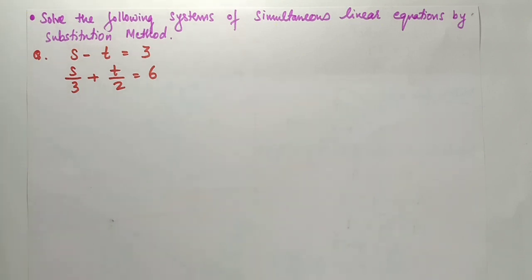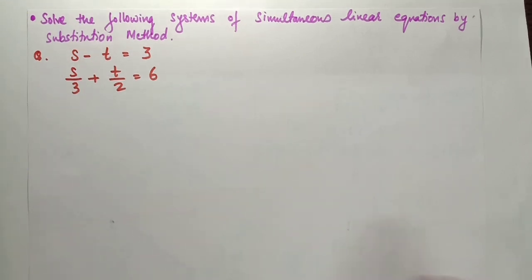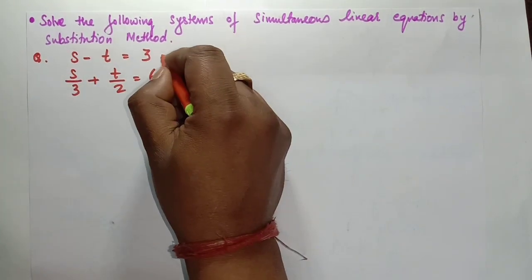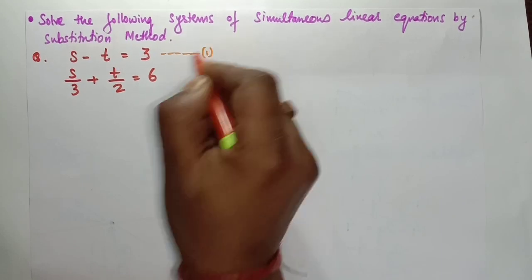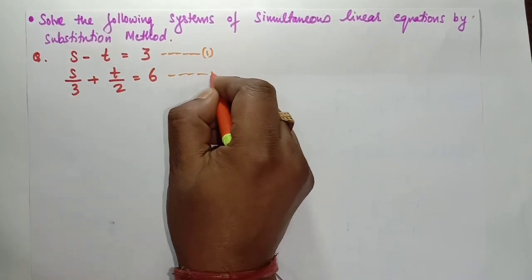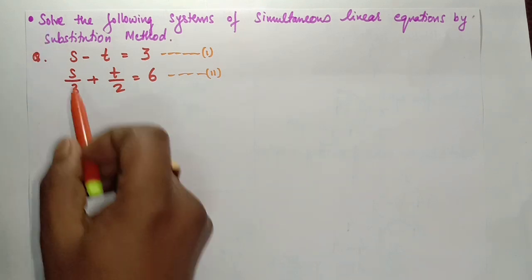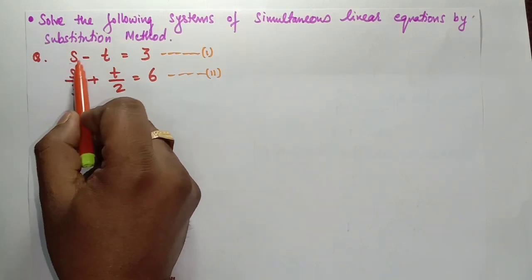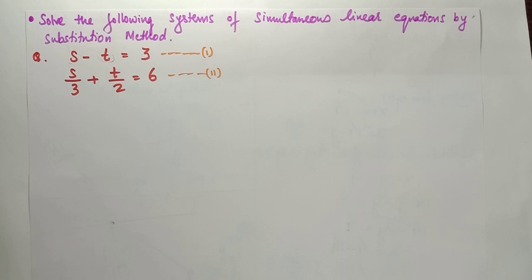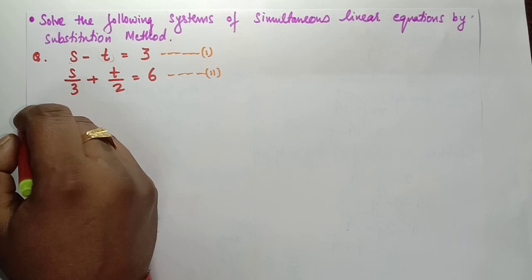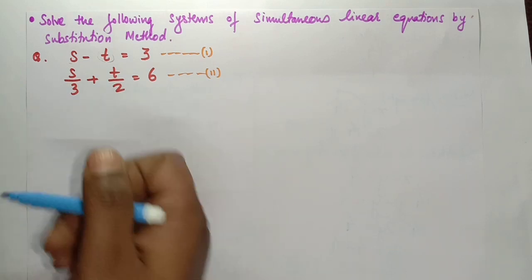For the next problem, we have s minus t equals to 3 — this is equation one — and s divided by 3 plus t divided by 2 equals to 6 — this is equation two. We have to find the value of variables s and t using the substitution method.